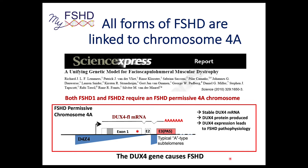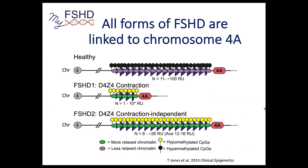All FSHD forms are linked to chromosome 4A. That's FSHD1 and FSHD2. That's because the DUX4 gene that causes FSHD is located on chromosome 4Q, and it needs the 4A subtelomere to become properly expressed. Both FSHD1 and FSHD2 are epigenetically linked to chromosome 4A.